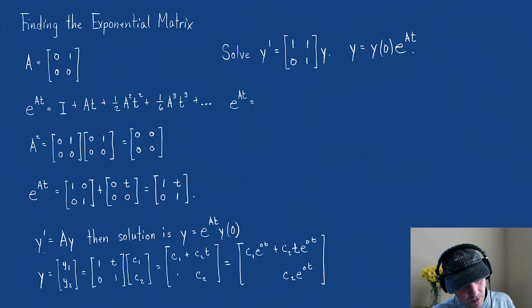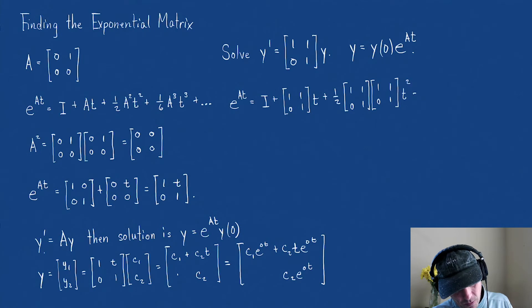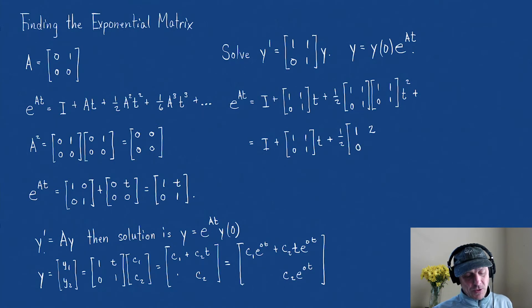Well, that is e^(At) equals I plus A times t, which is [[1,1],[0,1]]t plus (1/2) times A², and I multiply [[1,1],[0,1]] times [[1,1],[0,1]] times t². We'll do one more of these. I plus [[1,1],[0,1]]t plus (1/2) times - now, if I multiply these two, I'm going to get [[1,2],[0,1]]t².